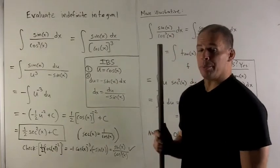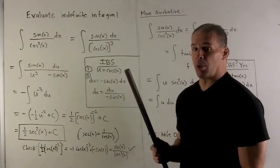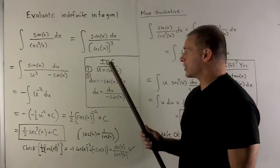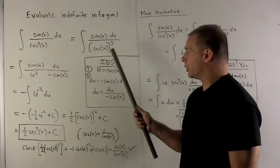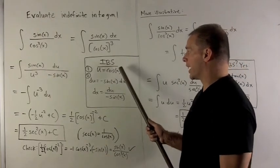Now we see that there's a composition of functions in here, so I want to target the inside. So the inside is cosine x, so we're going to let that be equal to u when we go through our integration by substitution. So u equals cosine x.